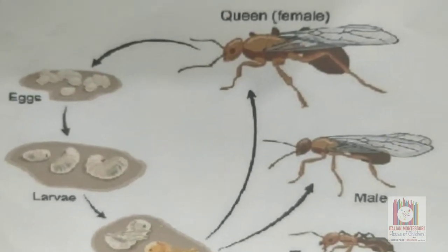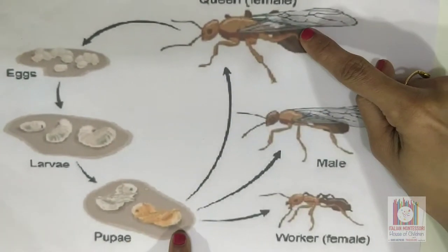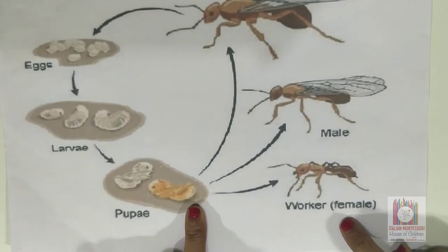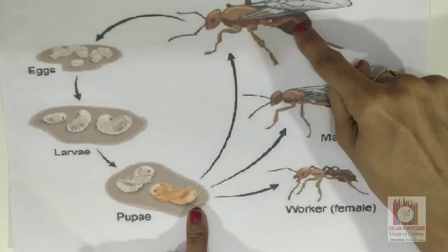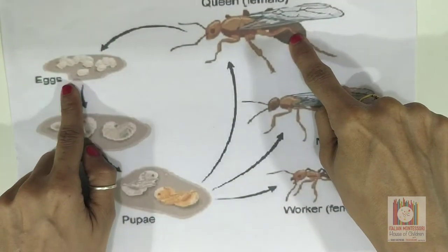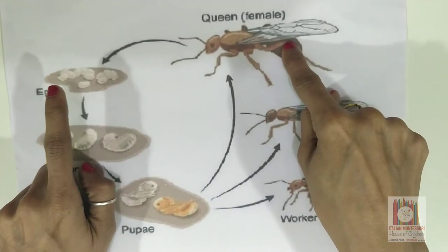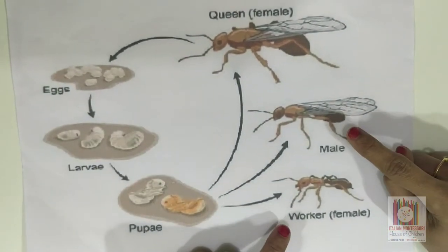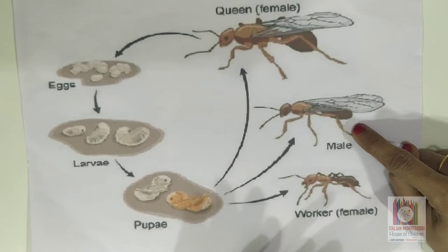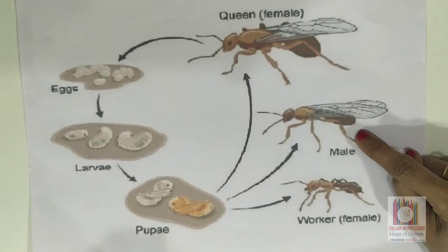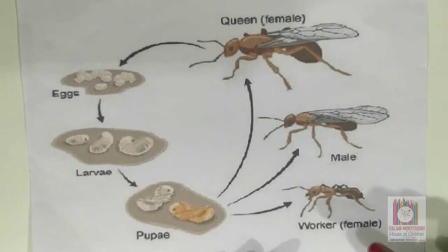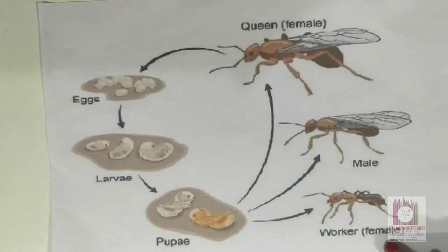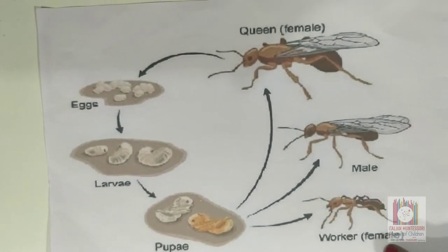The adult ant can be a queen, male, or worker. The queen ant lays eggs — only the queen ant can lay eggs. The male ant will protect the whole anthill, and the worker ant will collect and store food in the anthill.